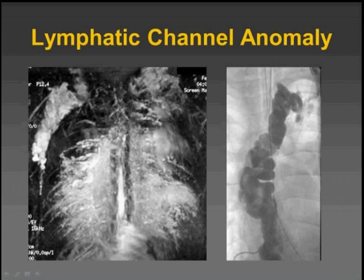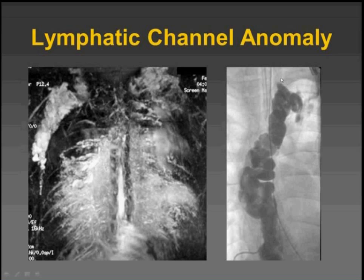In addition to the cystic lymphatic malformations, there are lymphatic channel anomalies. This is a type of MR lymphangiogram using a heavily T2-weighted sequence with saturation in three planes. You can see all these intercostal lymphatics are dilated and visible, and contrast injection in the thoracic duct shows diffuse enlargement.